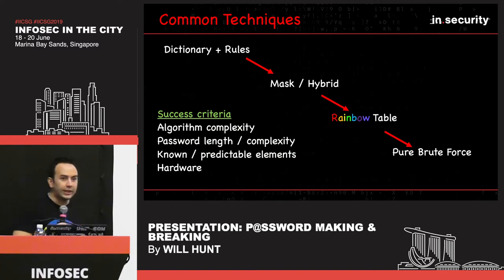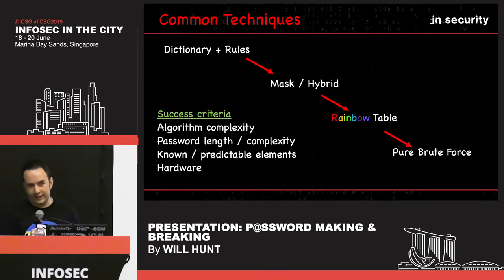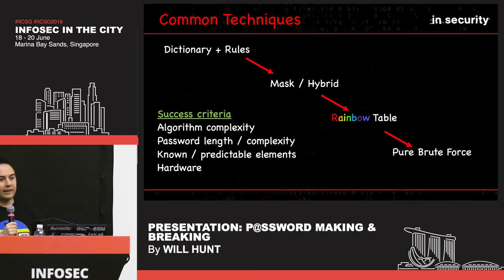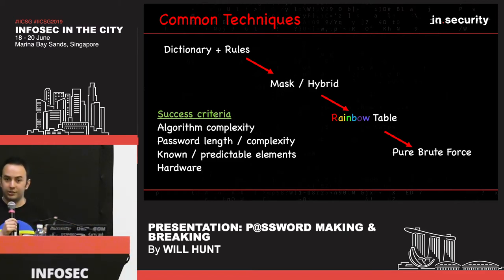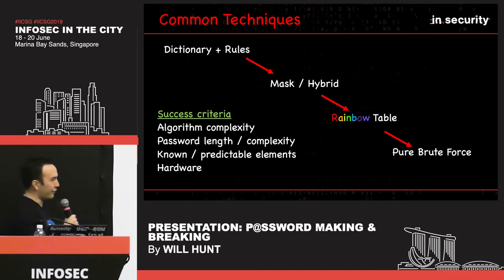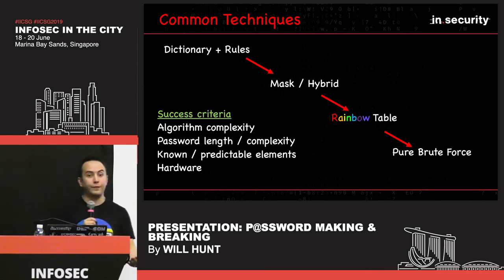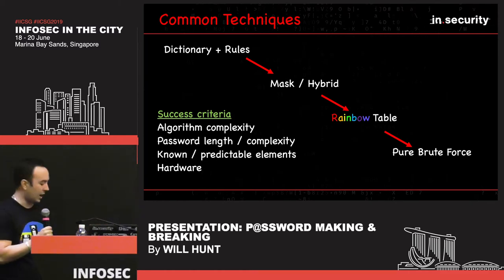Common techniques: traditionally, the go-to technique is rules and dictionaries. Many of you might have heard of a common rule set like rockyou.txt — there are 101 million rules out there you can use. You take your password candidate from your dictionary, hash it, compare it to the stolen hash, optionally add rules, and if the hash matches, success. We'll also discuss mask and hybrid attacks. Rainbow tables are becoming less useful over time, and pure brute force exhausting an entire key space is also hardly used these days.